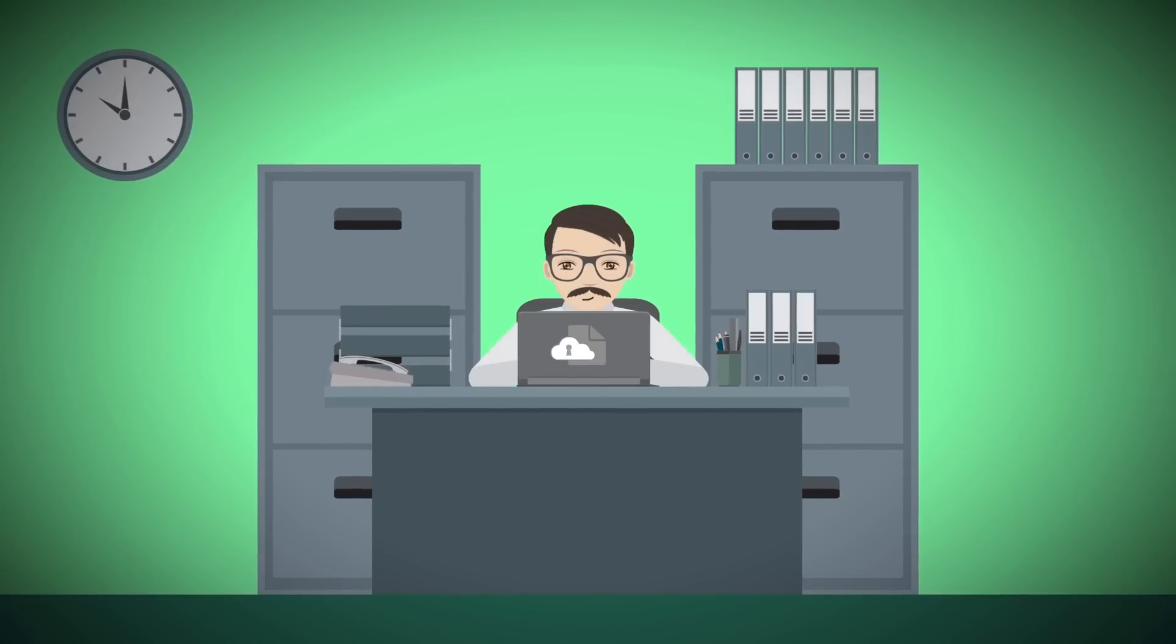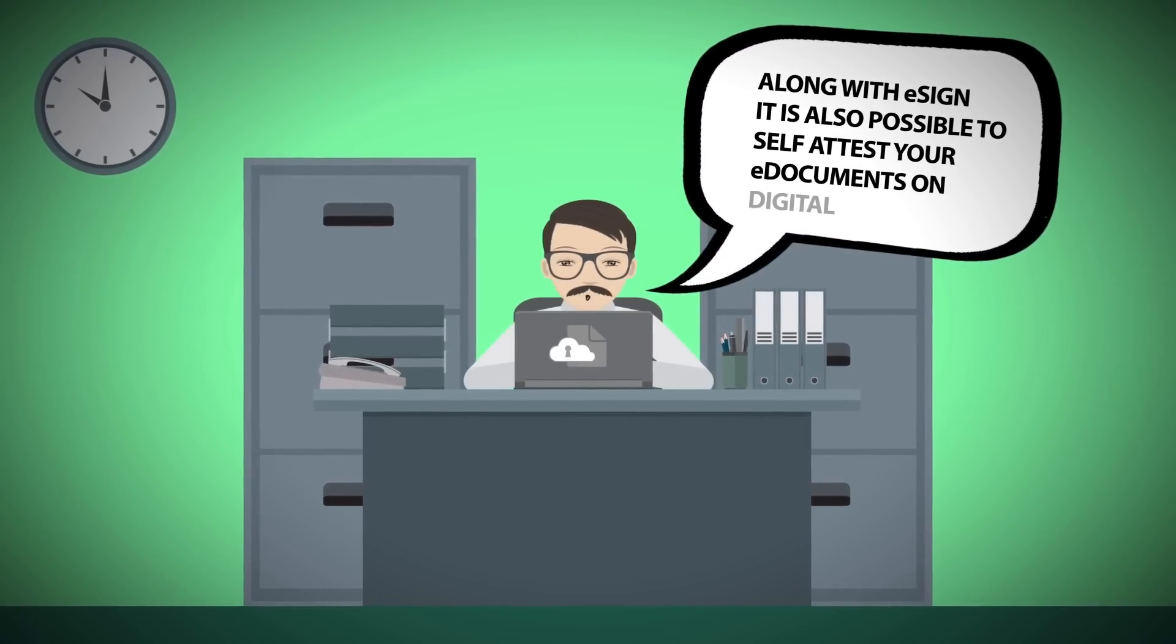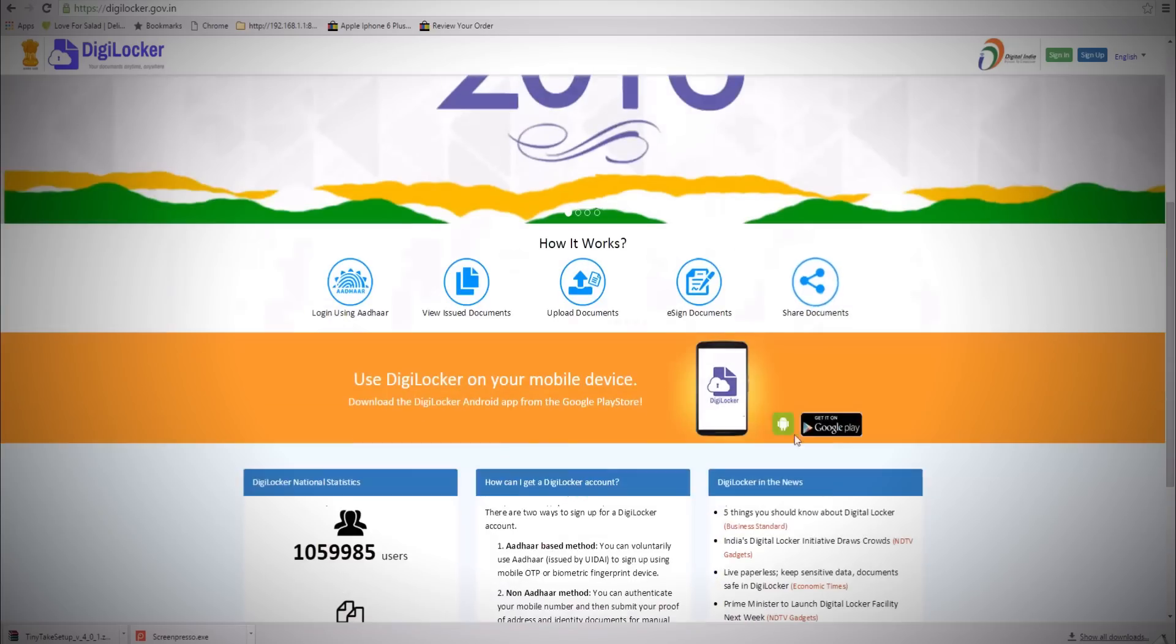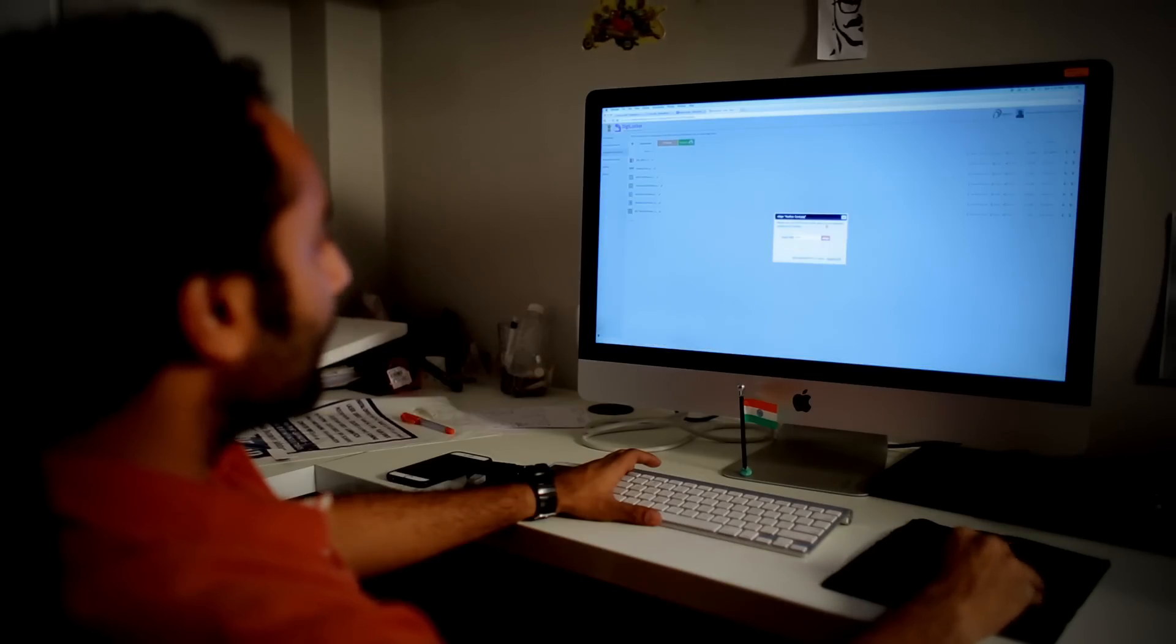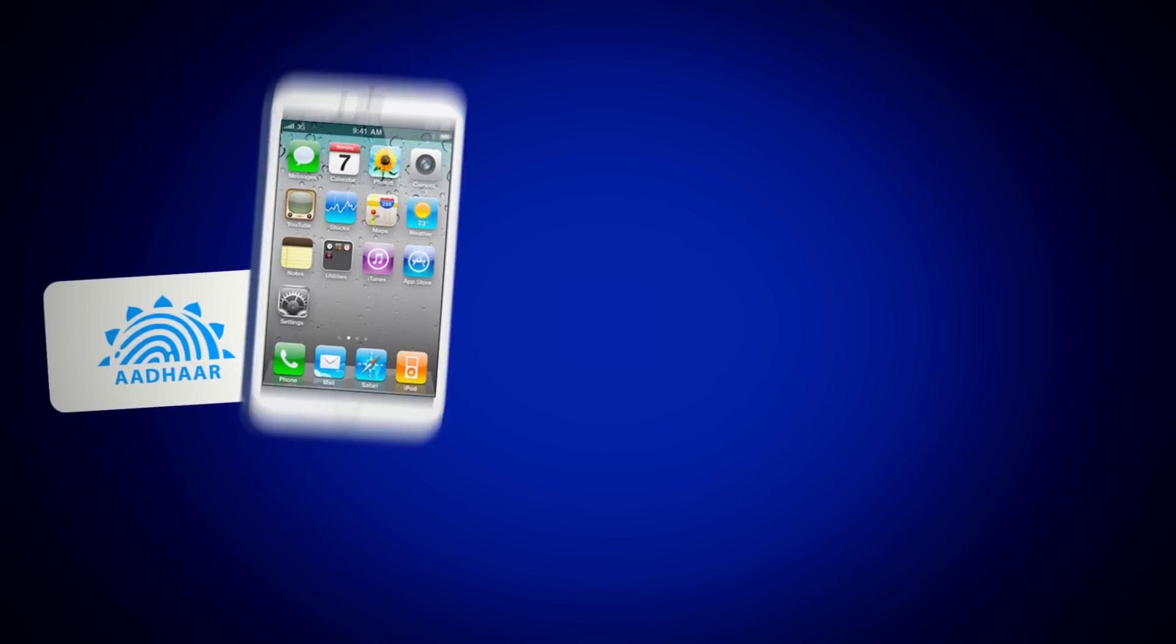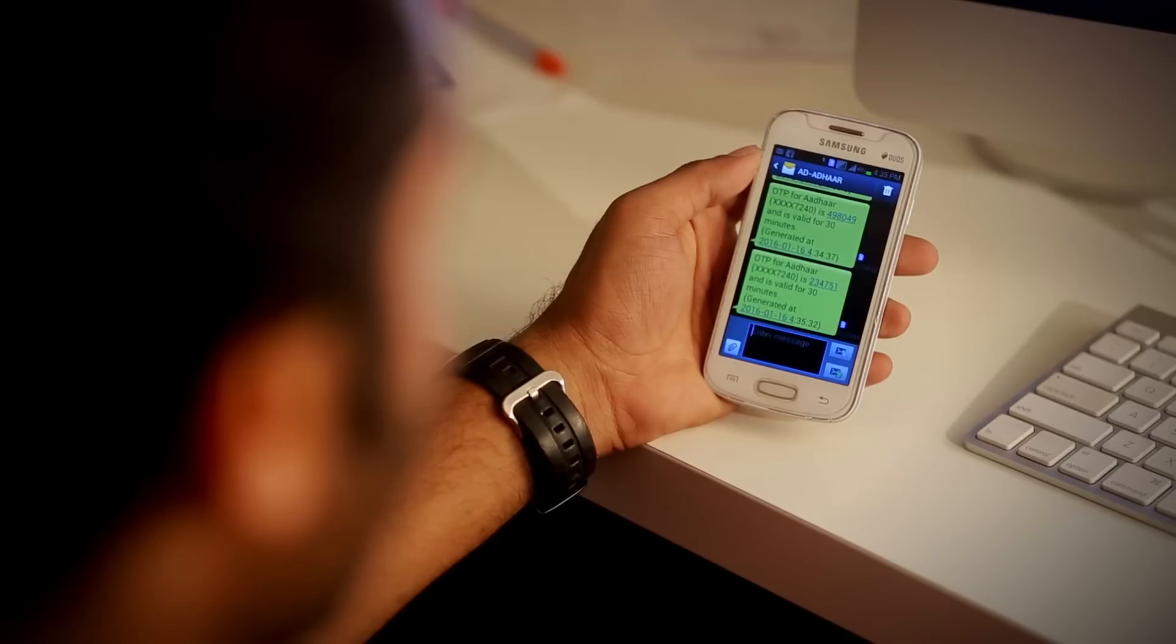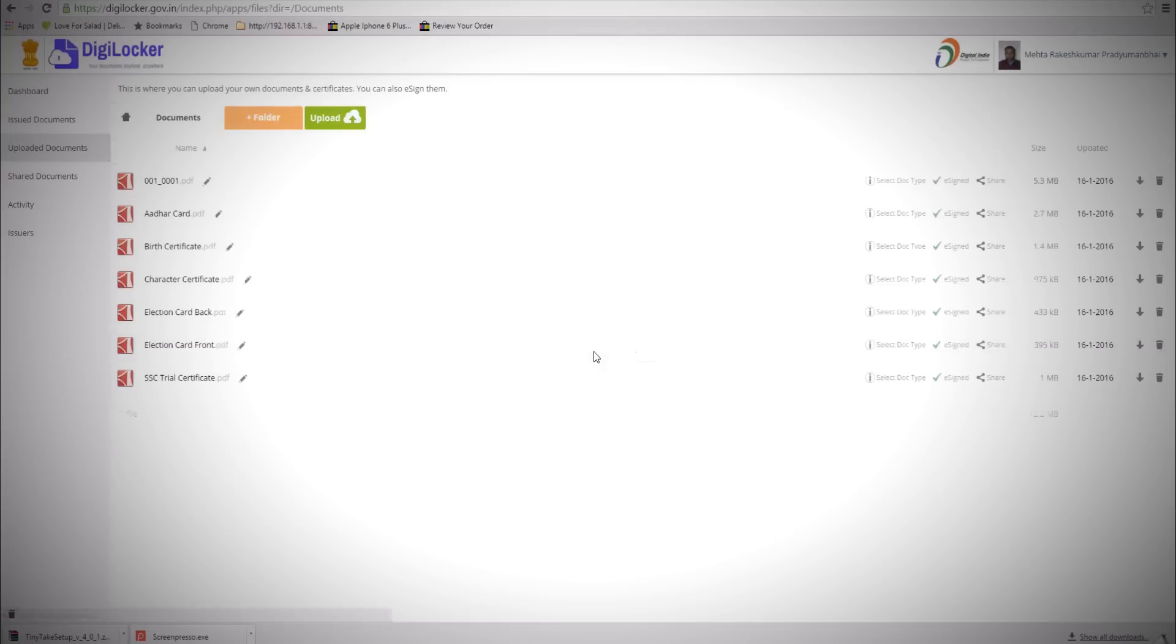Which means along with e-sign, it is also possible to self-attest your e-documents on Digital Locker. Under this service, once you click on e-sign, you will be asked to input your Aadhaar card number, after which you will receive a one-time password on your Aadhaar linked mobile number.